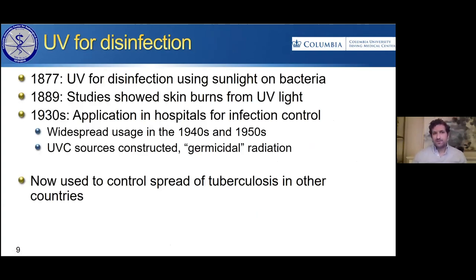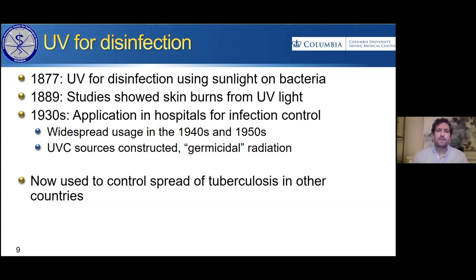The sun as a natural UV source has been explored since the late 1800s and led to some of the first uses of UV for disinfection purposes. Originally, sunlight was used to get UVB light, and it was observed that this could kill bacteria. Later in the 1800s, studies showed that UV light could cause sunburns. Early in the 1900s, new technology came out that could create UVC light artificially. UVC was then applied in hospitals starting in the 1940s and 50s, and was useful for preventing the spread of diseases like measles and tuberculosis. These UVC sources are still used today to control the spread of tuberculosis in other countries.